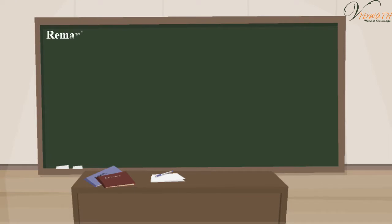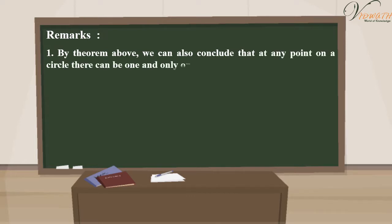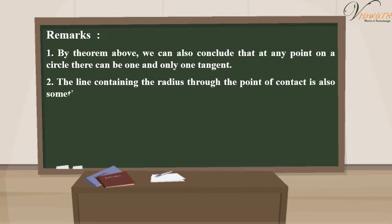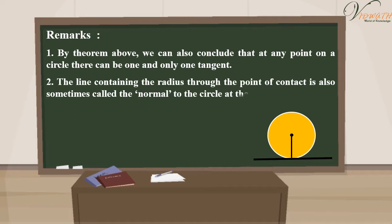Remarks: By theorem above, we can also conclude that at any point on a circle, there can be one and only one tangent. The line containing the radius through the point of contact is also sometimes called the normal to the circle at the point.